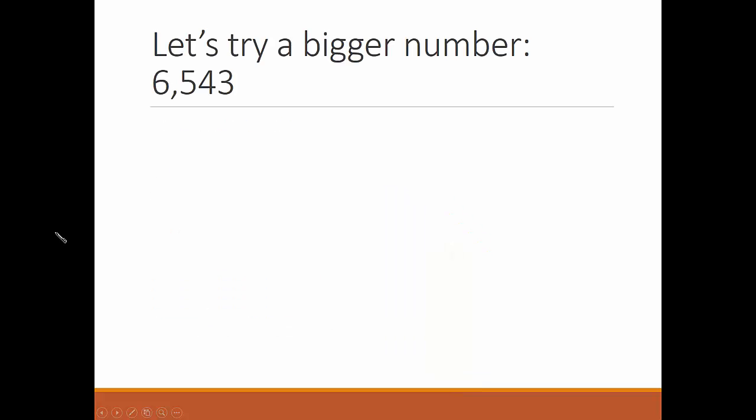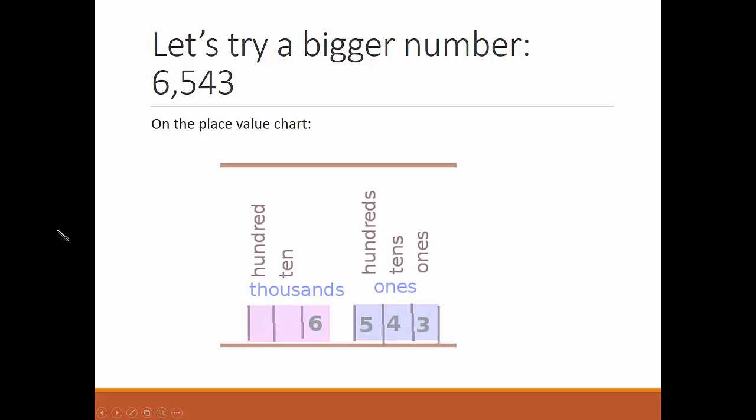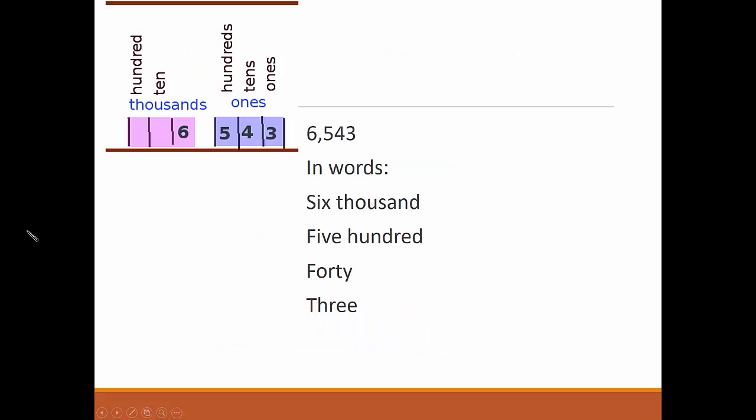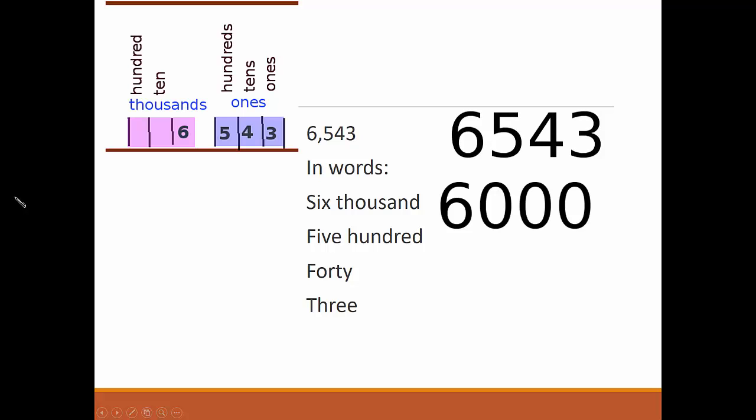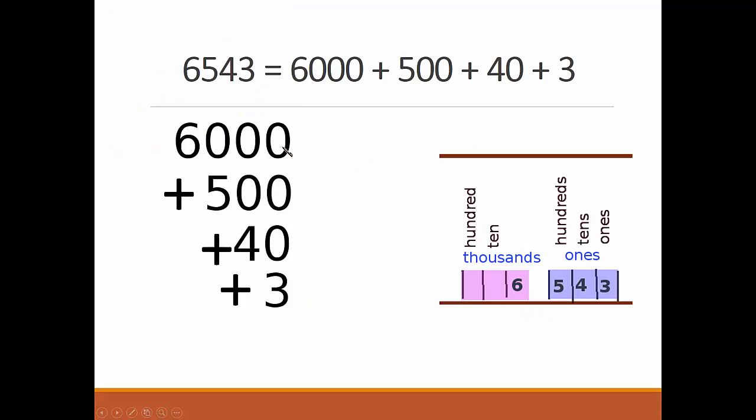Let's try a bigger number. On the place value chart, 6,543. In words, 6,543. We can break it up: 6,000 plus 500 plus 40 plus 3. We put zeros in the spaces, and we can write it either way.